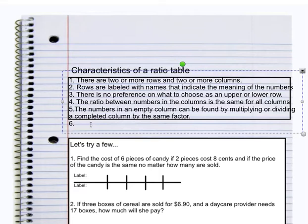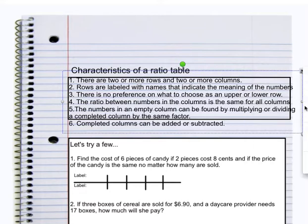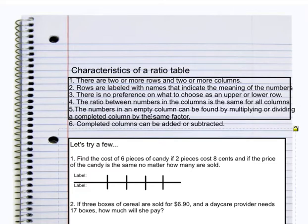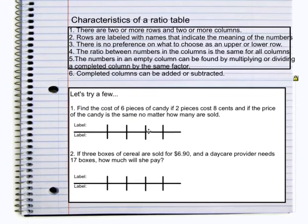Lastly, completed columns can be added or subtracted. So there's a lot of various scenarios that are characteristics of a ratio table. It's really important to just be aware when you're filling out that kind of information that there's many ways that that can be done.